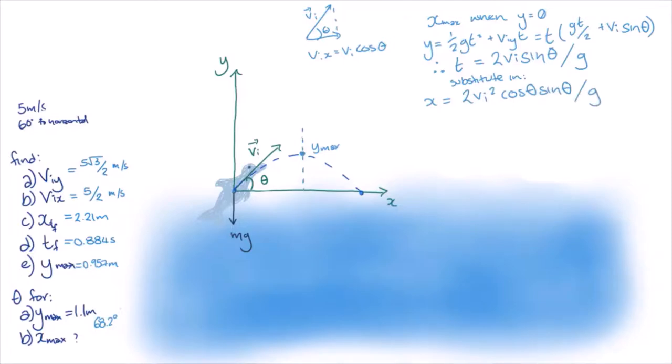We want the value of theta that makes x the biggest. It's not obvious what theta should be to make x as big as possible, but if we remember the trigonometry rules, we can rewrite 2 times sin theta times cos theta as sin of 2 theta.